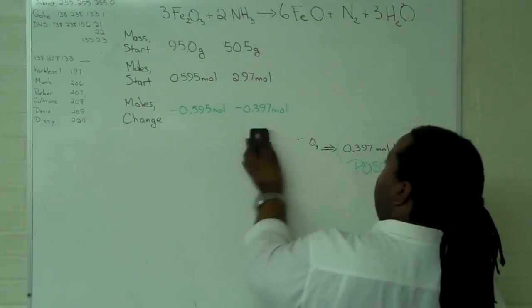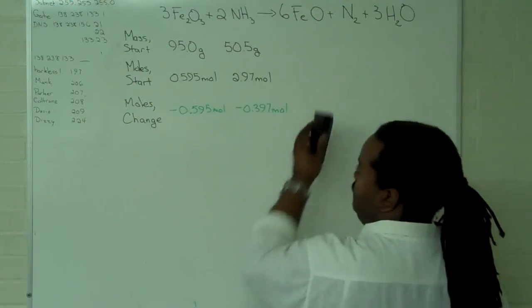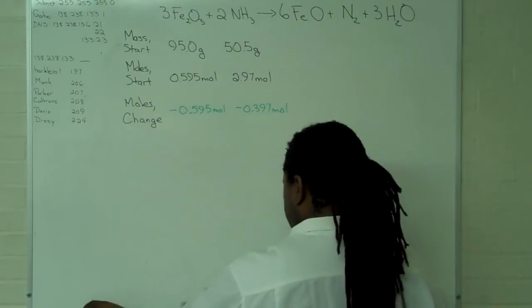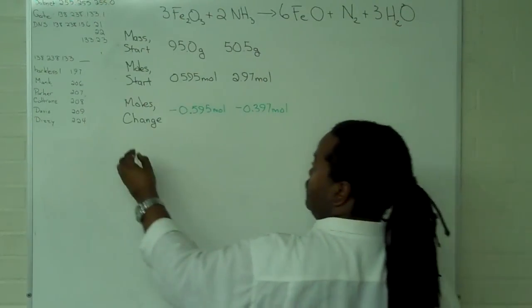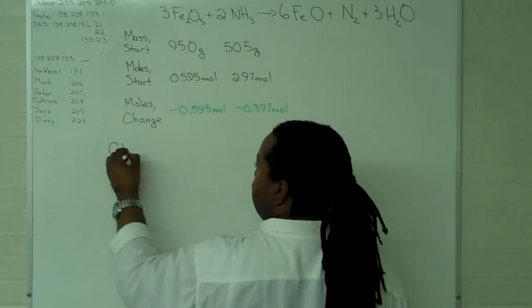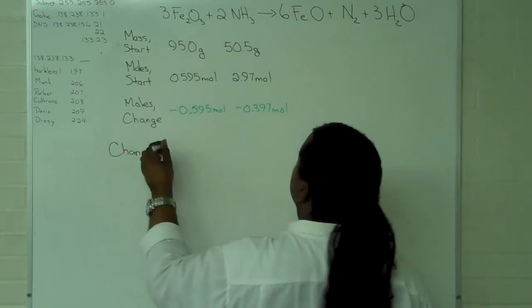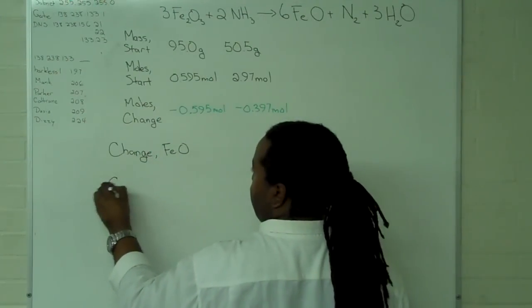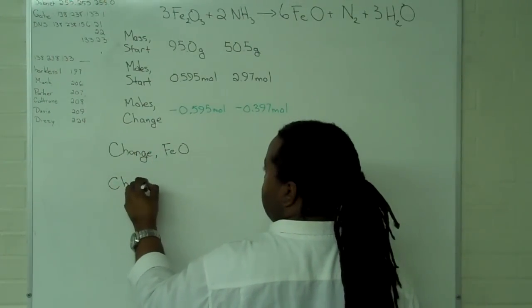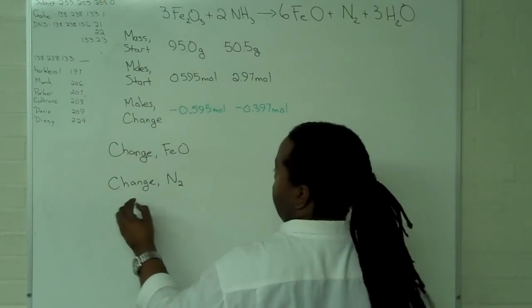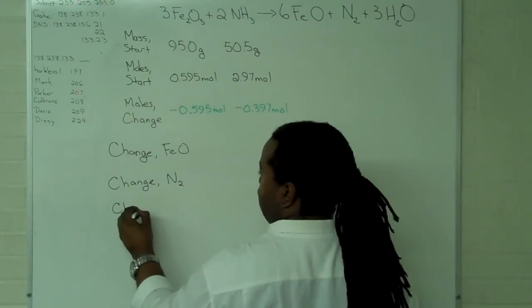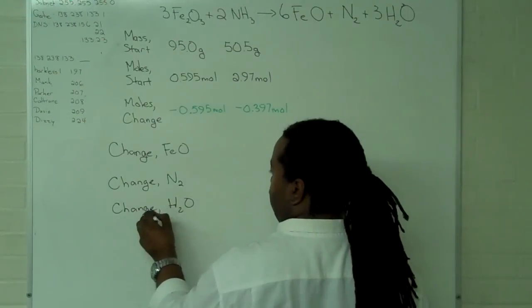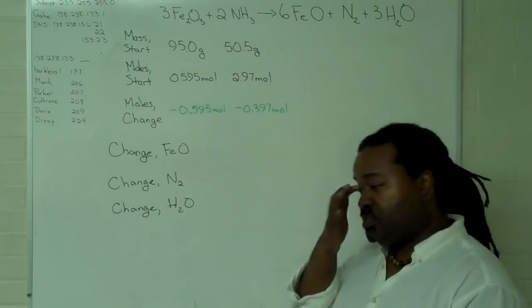Now, the next thing we have to do in this thinking step is determine the change in moles for our products. In this case, we have three. The procedure remains the same. We have to determine a change for the iron-2 oxide, the change for the nitrogen gas, and the change for the water.